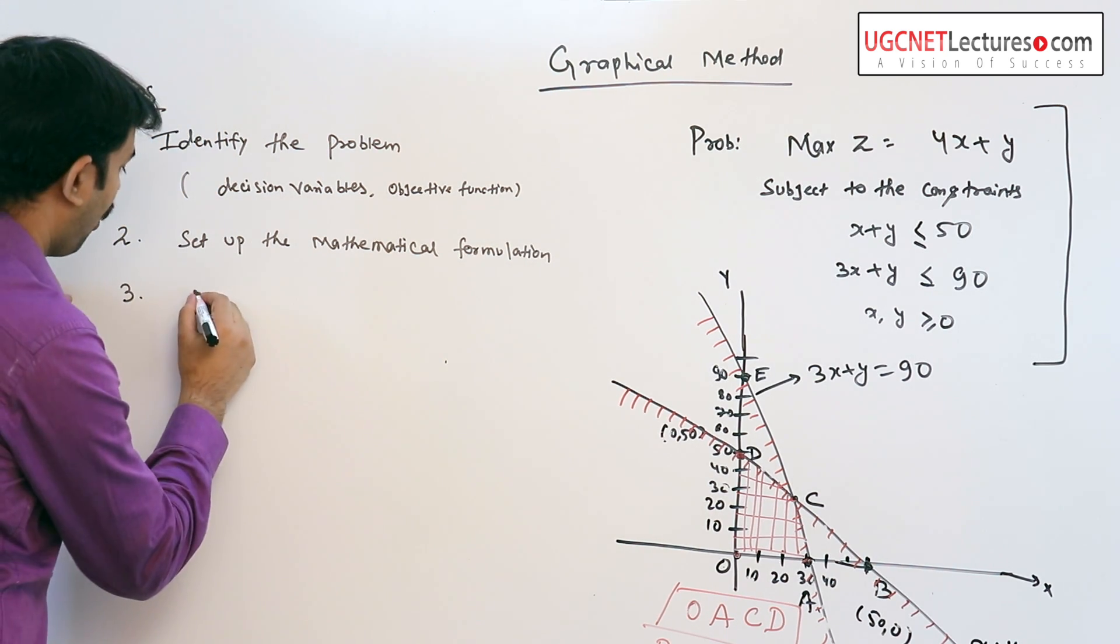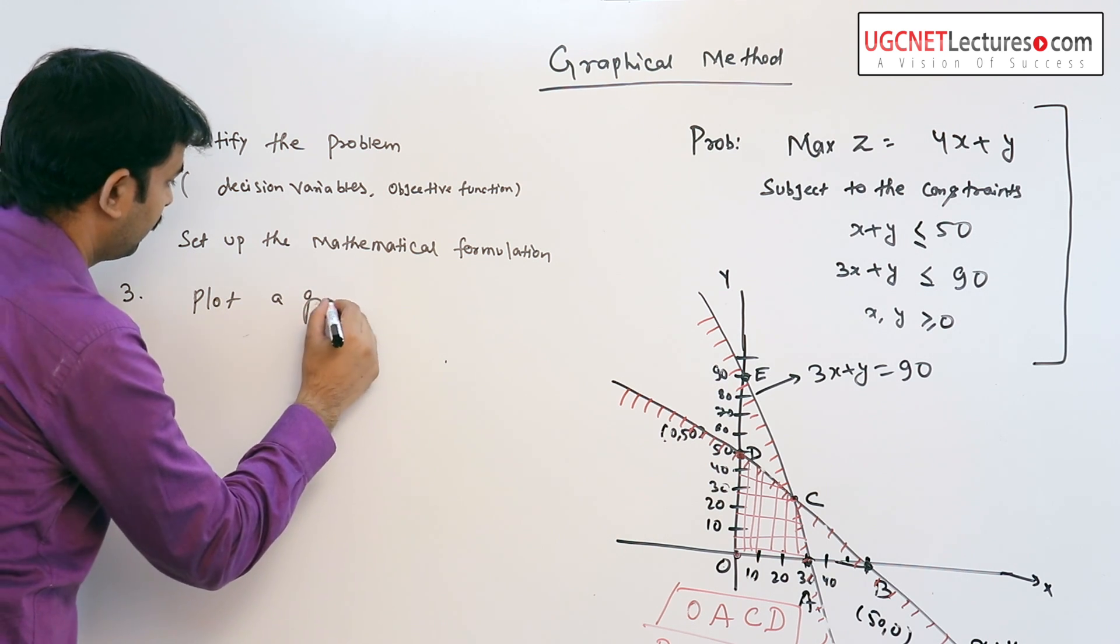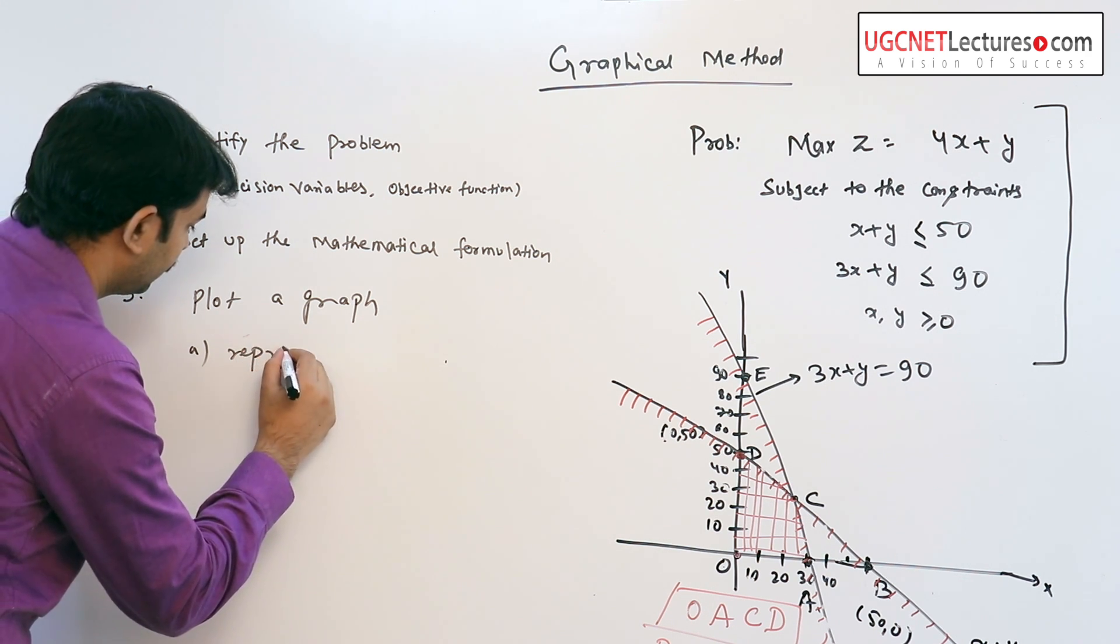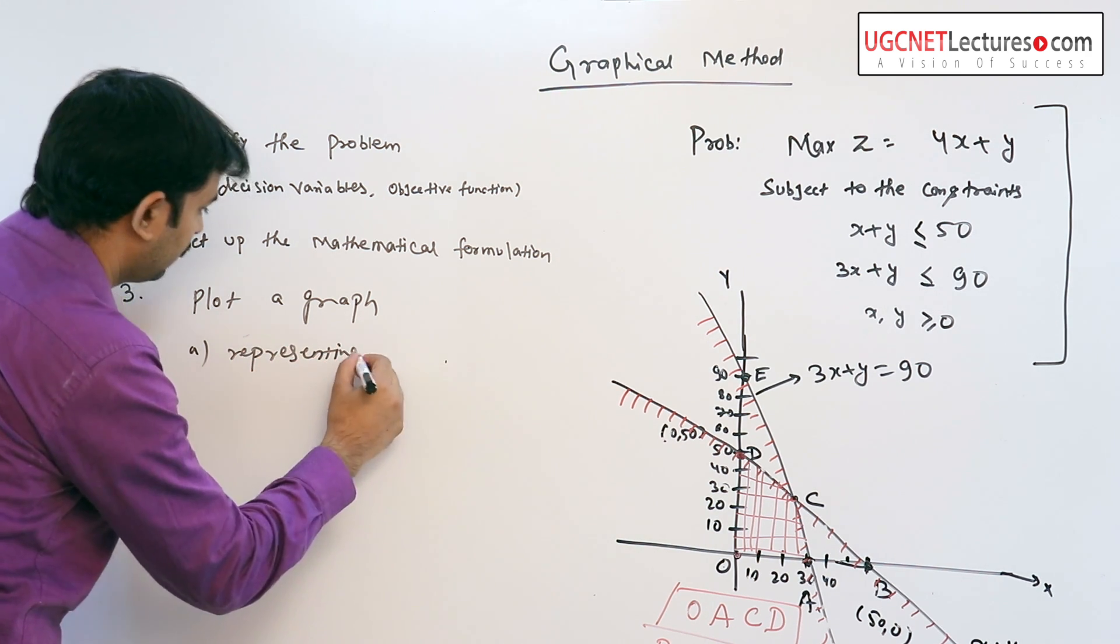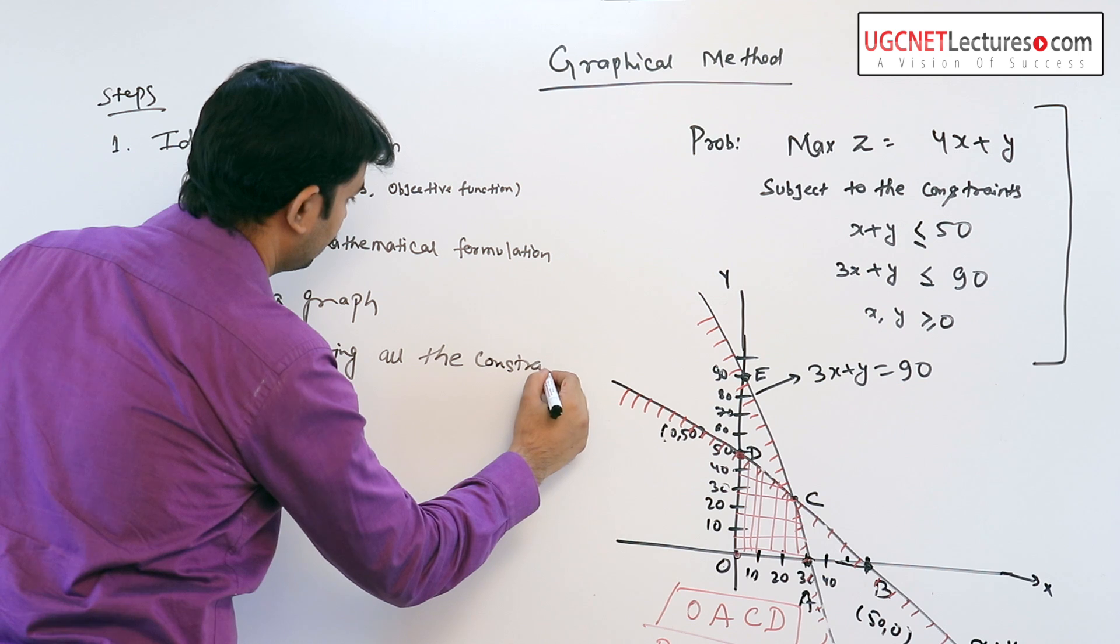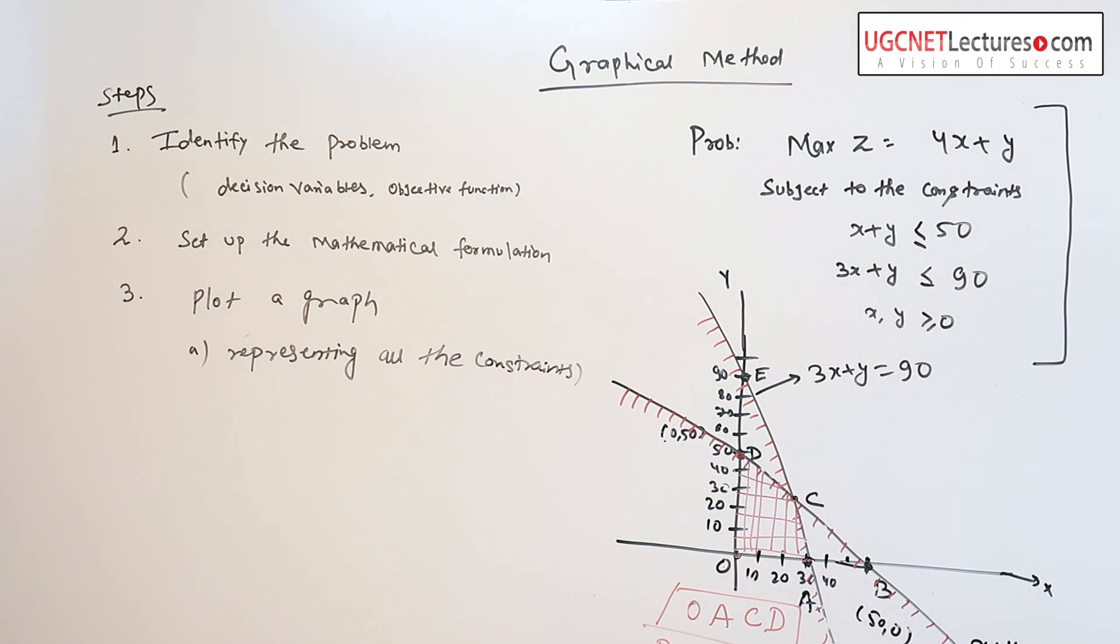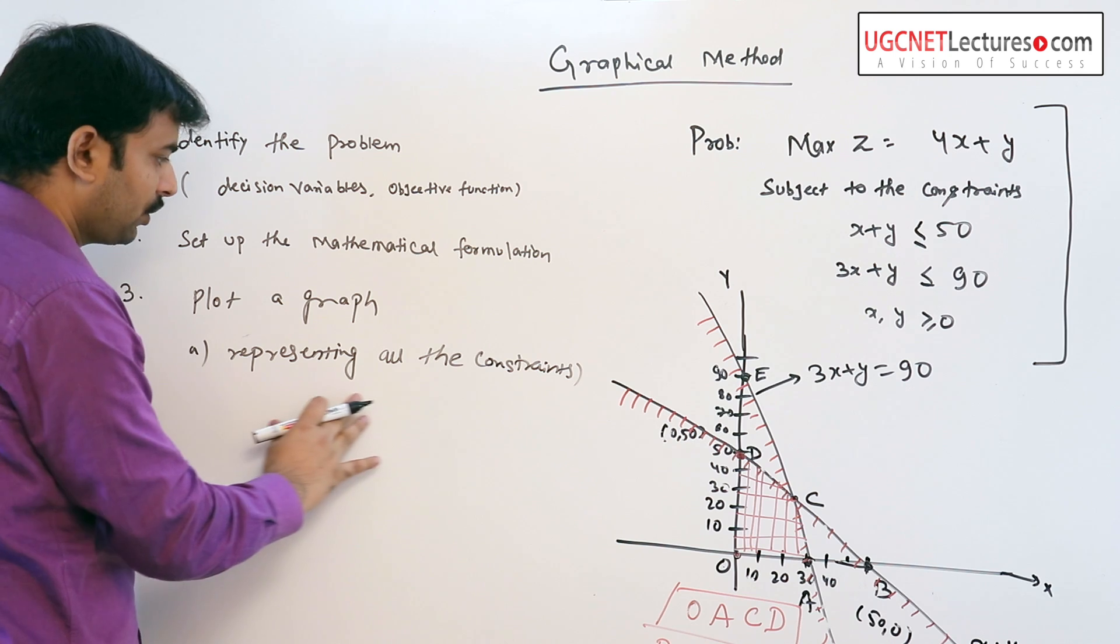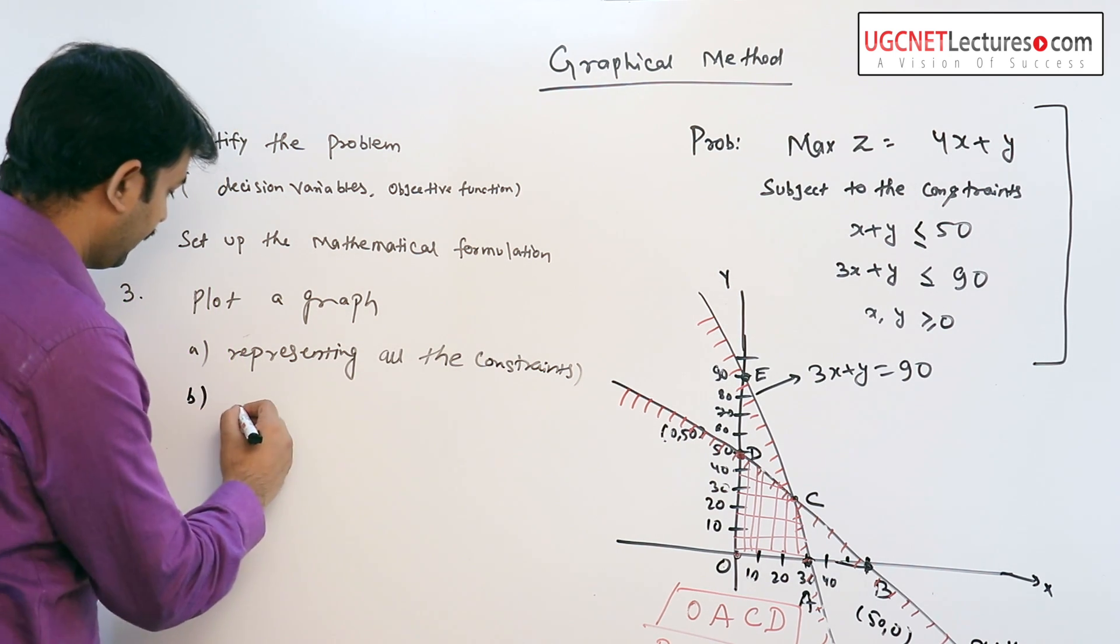Third, plot a graph in such a way representing all the constraints. Plot a graph that represents all the constraints and identify the constraints.